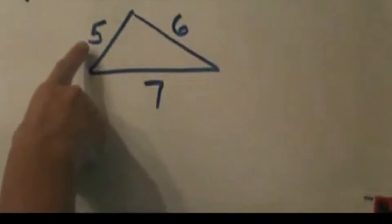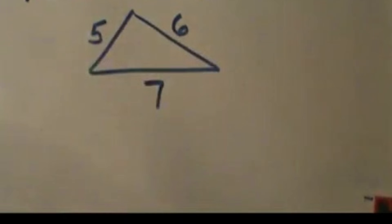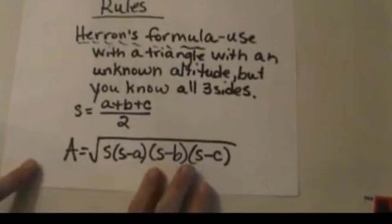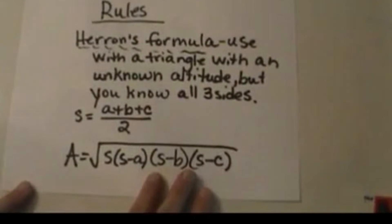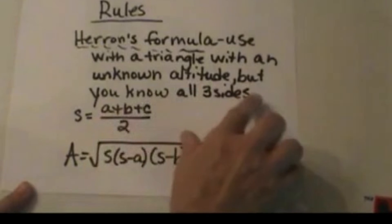So here's our example. We have sides of five, six, and seven in a triangle, but we don't have an altitude and we don't have a way to find an altitude. So I'm going to share with you the formula and then I'm going to run through an example of it. Heron's formula is used when you have a triangle with an unknown altitude, but you know all three sides.